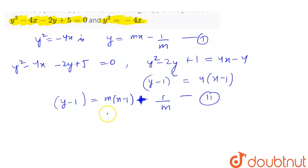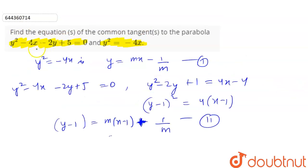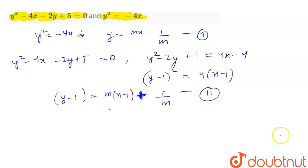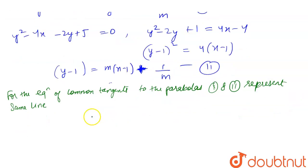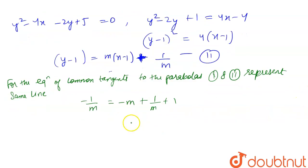The equation of the tangent is y = mx - 1/m. We substitute y → y - 1 and x → x - 1 for the shifted parabola. For common tangents, parabolas 1 and 2 must represent the same line, so: -1/m = -m + 1/m + 1. This is the condition for the common tangent.